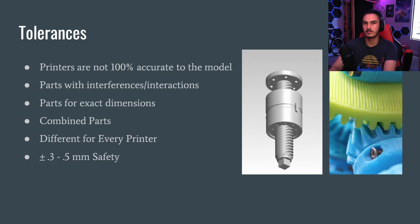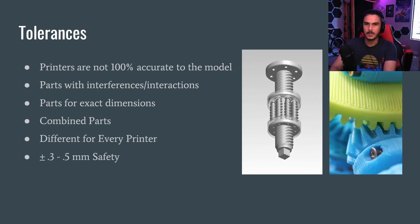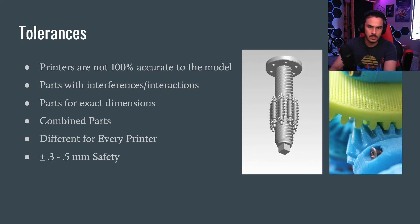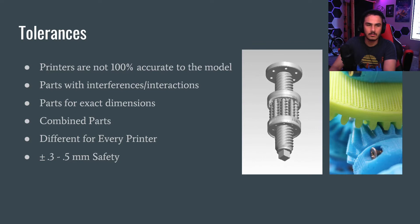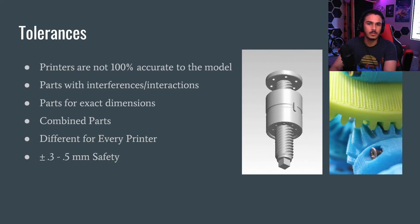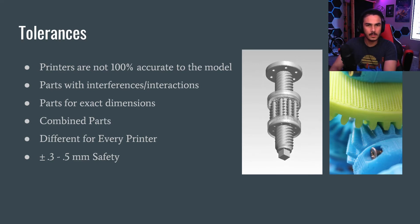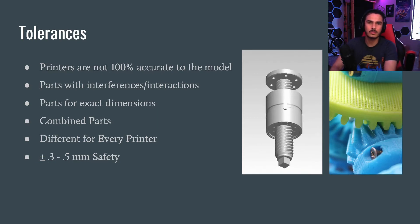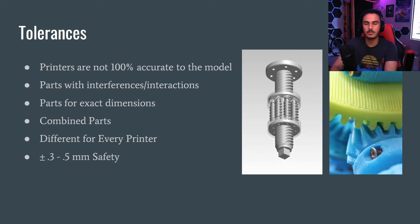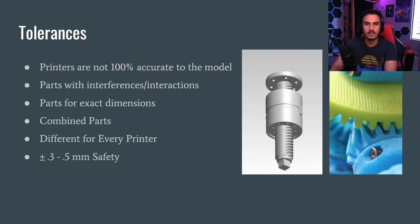Now we're going to talk about tolerances. Tolerances are something that happens in every manufacturing process, be it 3D printing, be it CNC manufacturing of a motor. Everything is not 100% accurate to the model in the real world — it's basically impossible to get it perfect. So what tolerances are is what you have to mathematically put into your parts if you're making moving parts to make sure they actually do work.